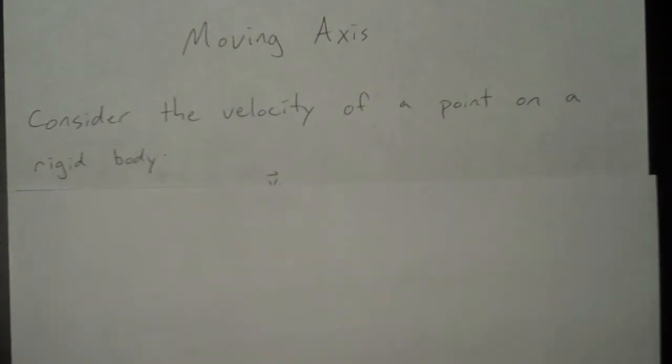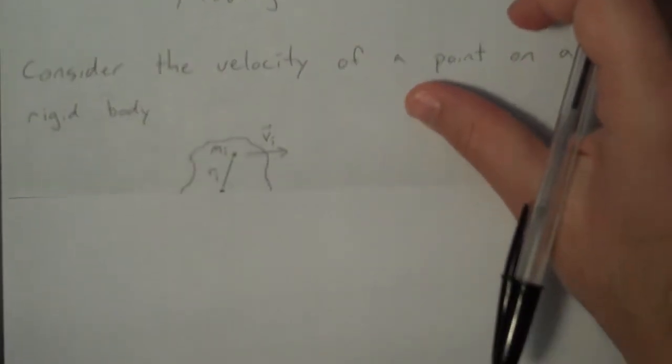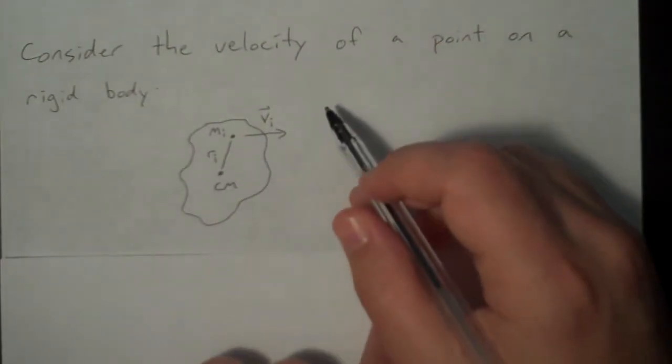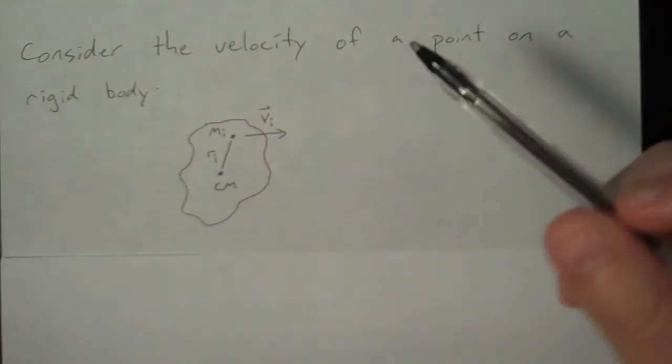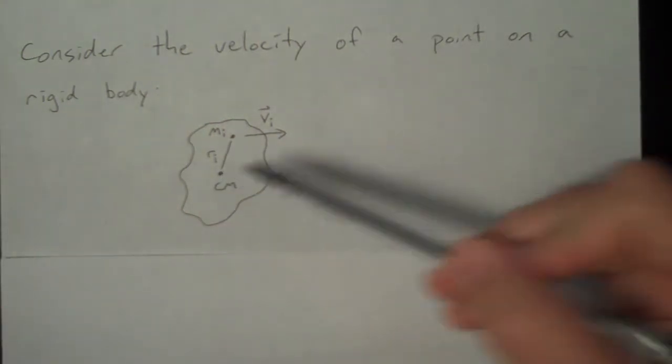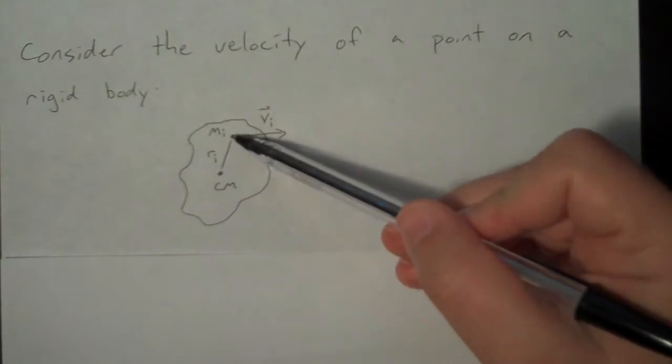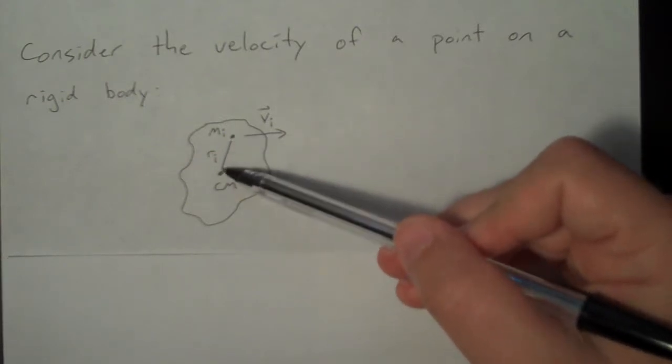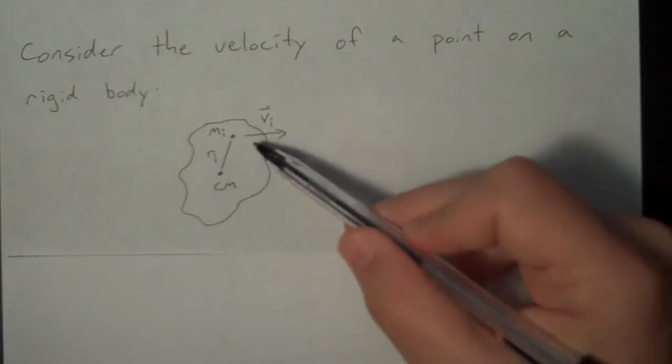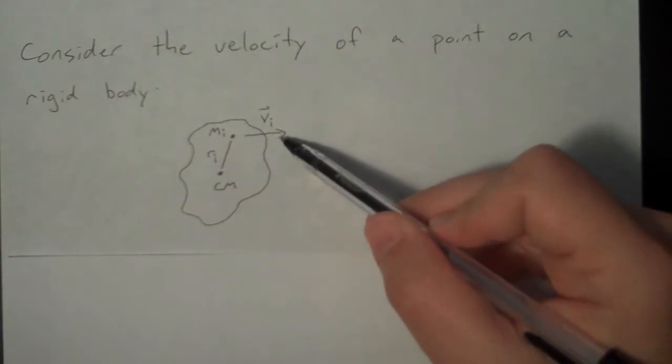And we're going to start that by considering just one point on a rigid body. So here is our rigid body. It just has some general shape. This is the center of mass. And we're looking at just one point on the rigid body. It has mass mi, distance ri from the center of mass, and velocity vi.